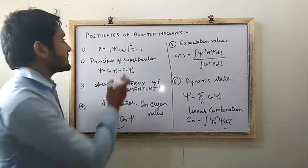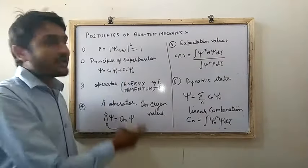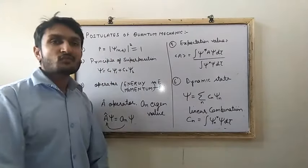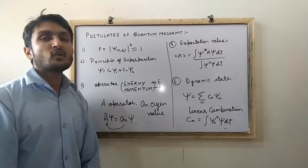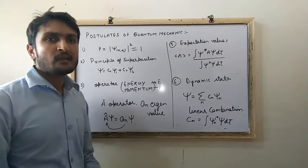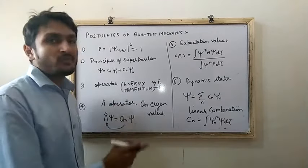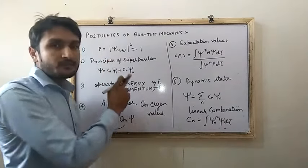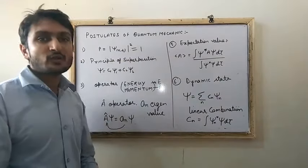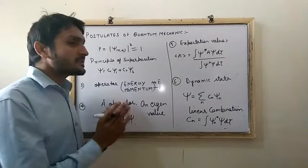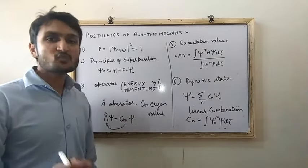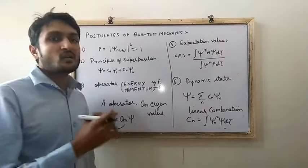The first postulate of quantum mechanics: P equals |ψ(r)|², where ψ is the wave function and P is the probability of the system. The first postulate states that every physical system is represented by a wave function defined by the probability function, and the probability is always one. The physical significance is that the probability of the system is always one, where ψ is the wave function.